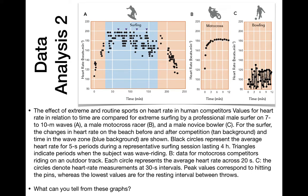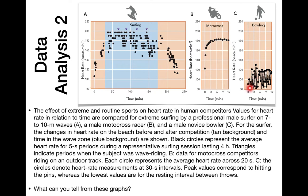Looking at graph B, the motocross racer's heart rate increases as the time goes on, but peaks at a maximum of about 180 — it doesn't keep going up forever. The adrenaline of the motocross race and the danger of it increases heart rate, but it stays pretty constant because you're not exerting yourself any differently — you're just driving and concentrating. Whereas in bowling, the heart rate is much lower. The physical exertion of bowling is a lot less than these sports, and it's a lot less dangerous.